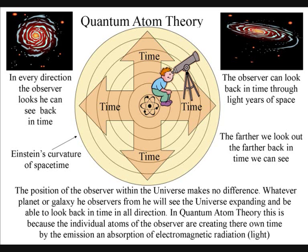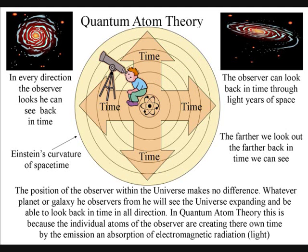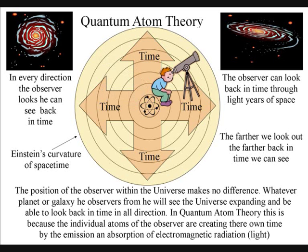The position of the observer within the universe makes no difference. Whatever planet or galaxy he observes from, he will see the universe expanding and be able to look back in time in all directions. The observer is at the centre of his own reference frame, because he is creating his own space-time geometry, relative to his position and momentum.